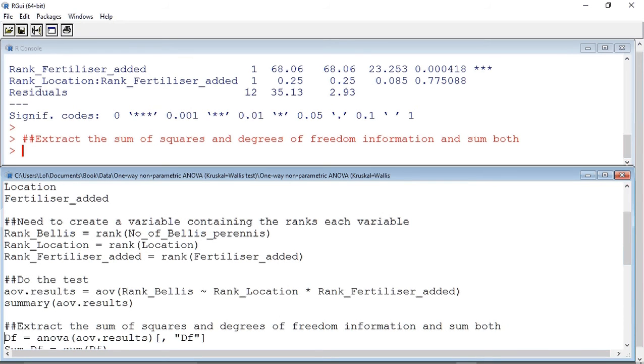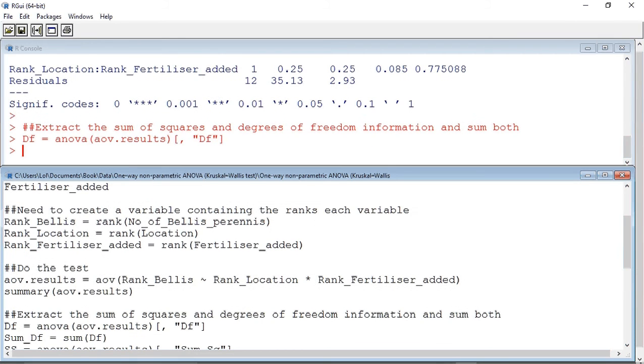So this next section is extracting the values we need from the aov.results variable. First, I'm creating a variable called DF for degrees of freedom, which contains all the degrees of freedom information. Next, I'm creating a second variable called sum_DF because the equation requires us to use the sum of all the degrees of freedom.